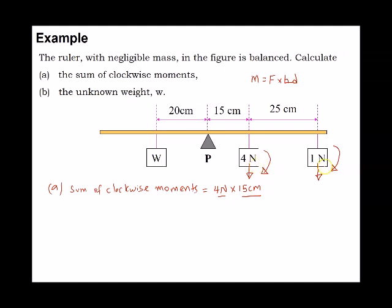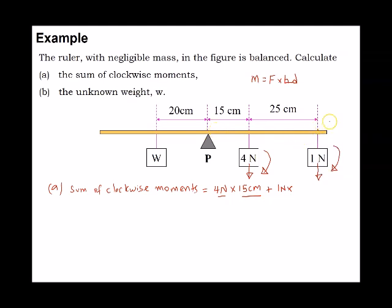For the clockwise moment from the 1 newton force, I add: 1 newton multiplied by its perpendicular distance to the pivot. Remember, the perpendicular distance is from the line of action of the force all the way to the pivot — so it's 15 + 25 = 40 cm. The sum of clockwise moments is therefore 60 + 40 = 100 newton-centimetres.